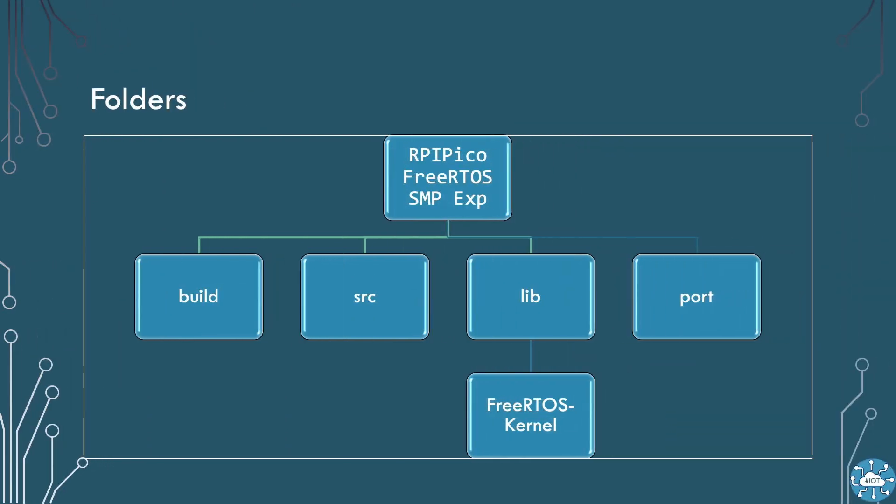Let's look at the structure of the project. The project is a folder with four key folders below it. Build will hold the binary files built by the compiler and the intermediary files. The source folder will hold all of the source files for our project. The lib folder contains the libraries we're using for this project. The port folder contains our port code for the specific libraries — normally the FreeRTOS configuration header file.